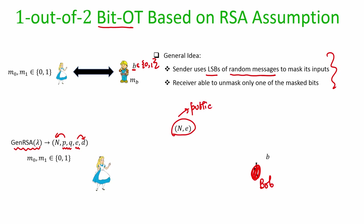You can imagine that for all OT instances Alice and Bob will interact in, Alice can run the RSA generation function once, generate the parameters, make n and E public, and then the same setup can be used for polynomially many OT instances.